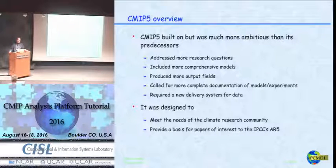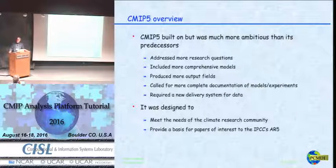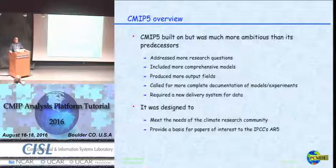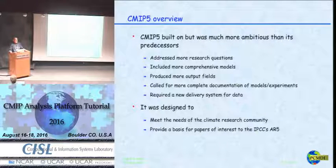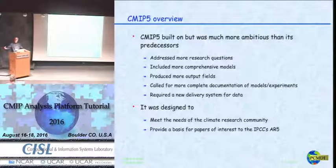Notably, CMIP5 included coupled carbon-climate models for the first time. It produced more output fields for analysis, called for more complete model documentation, and required a new delivery system for the data. The data is located in node repositories around the world linked together through the Earth System Grid Federation. That system's workability has improved dramatically over the last few years, though for data-intensive projects it makes sense to have a central location with computing facilities.